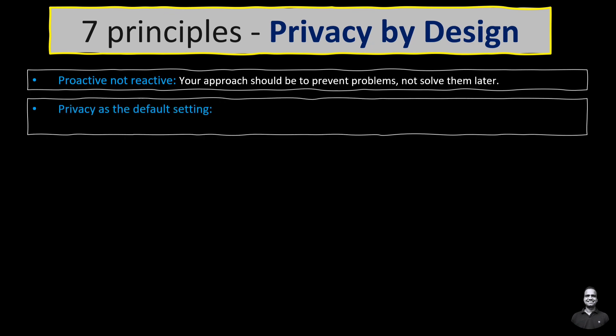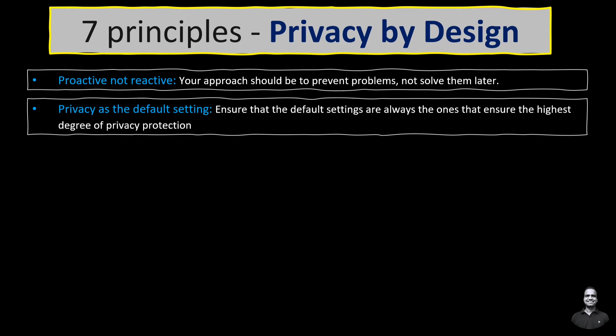The second principle is privacy as the default setting — make sure that the default settings are always the ones that ensure the highest degree of privacy protection. For example, a mobile application that requires location data defaults to off and must be manually turned on by the user.